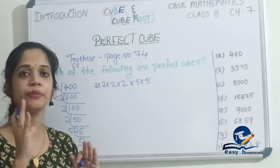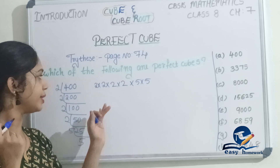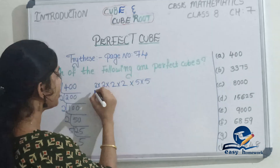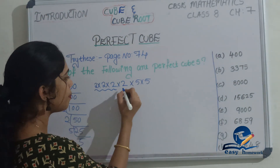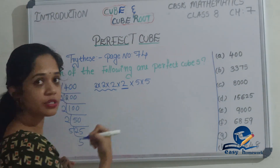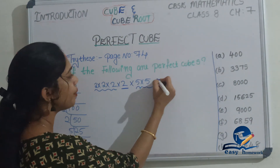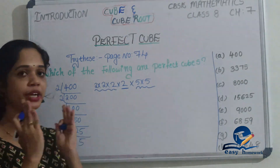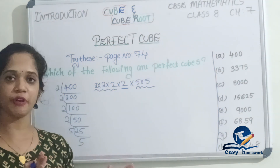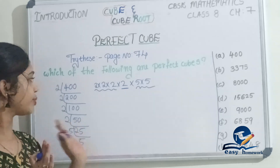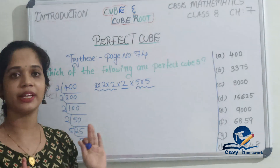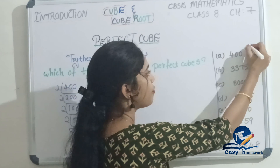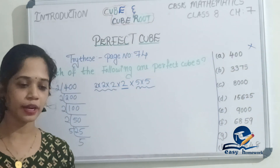We have to check for Perfect Cube. When we group the prime factors into triplets, we cannot form complete groups of three for all factors. So 400 is not a Perfect Cube.